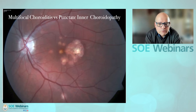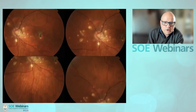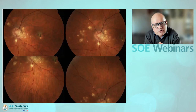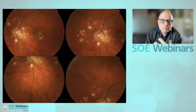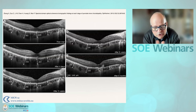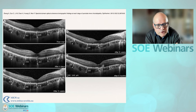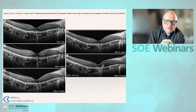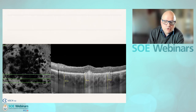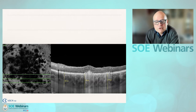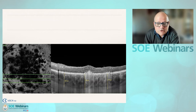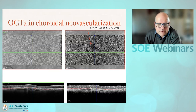Multifocal choroiditis and punctate inner choroidopathy (PIC) are two similar diseases affecting the posterior pole. They have small lesions, often more nasal for PIC. Both are associated with neovascularization of the macula, which responds to anti-VEGF but more importantly also responds to non-steroidal anti-inflammatory treatment. We do see thickening of the choroid in this disease, and you can monitor response to therapy by looking at choroidal thickness. Choroidal neovascularization in this disease is what you want to recognize.